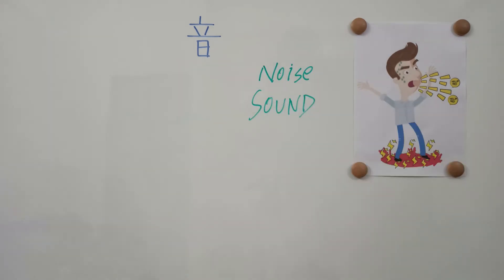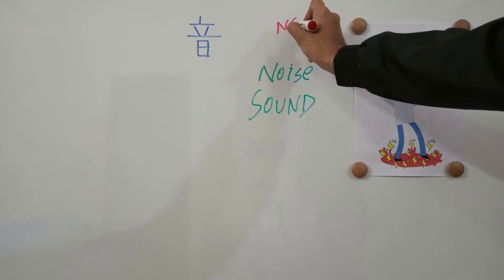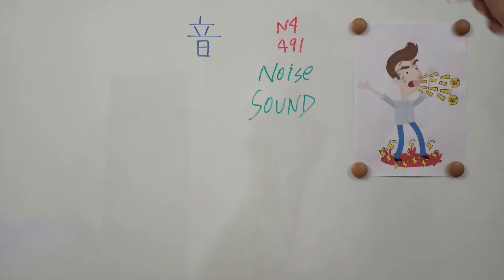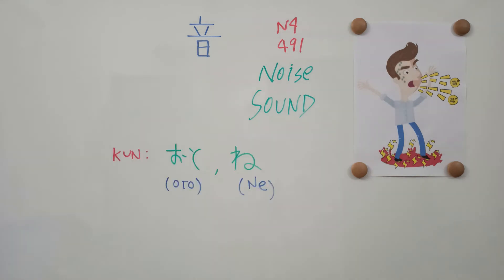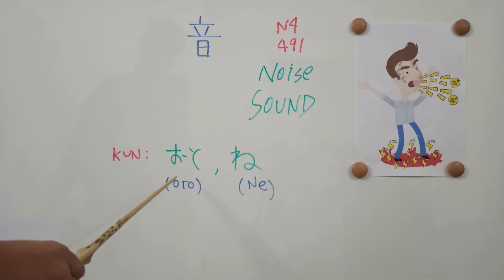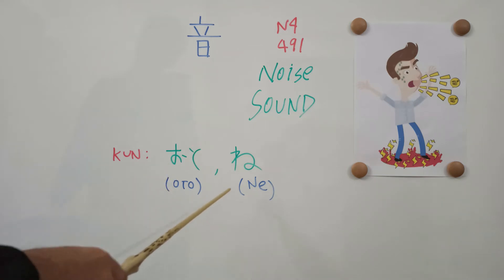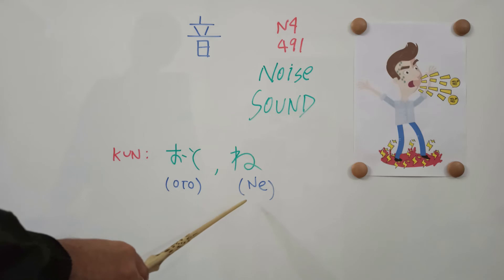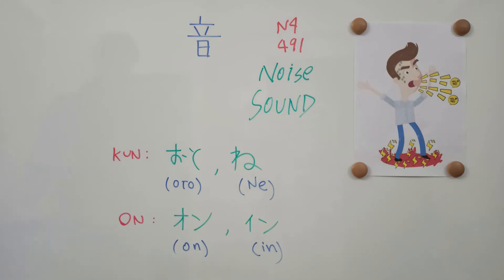This is an N4 kanji and has a frequency of 491. Next, we will cover the on and kun readings for this kanji. The kun reading is 'Oto.' There is another kun reading which sounds 'Ne.' The on readings for this kanji are 'On' and 'In.'